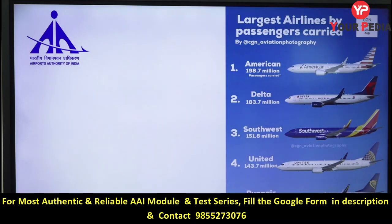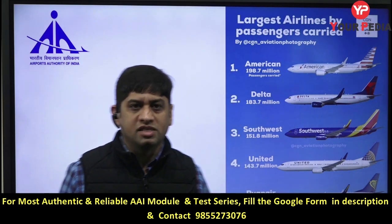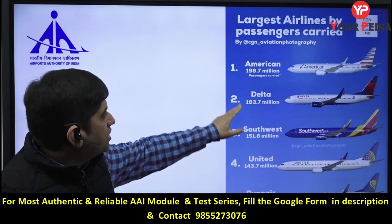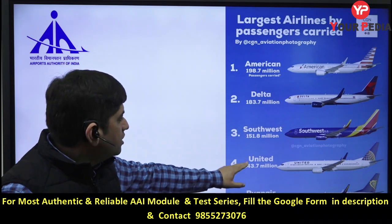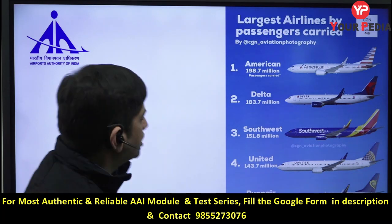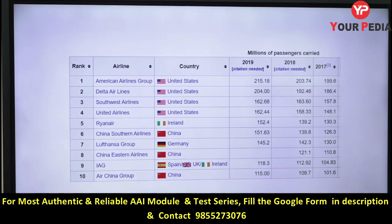If asked which international airline caters to the largest number of passengers, the answer is American Airlines. Delta, Southwest, and United are also American companies. Ryanair is Ireland-based. As far as revenue is concerned: number 1 is Delta, then American, then Lufthansa (Germany-based), then United, then Air France. By number of passengers: American Airlines, Delta, Southwest, United Airlines, and Ryanair.